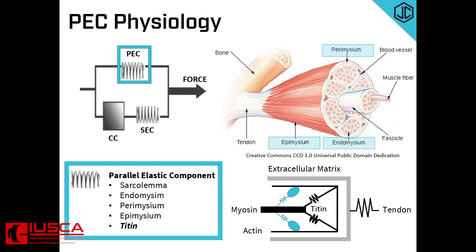The intramuscular connective tissues have three probable functions. First, it provides a framework to bind muscles together, ensuring proper alignment of muscle fibres, blood vessels, nerves, etc. Second, it enables active and passive force transmission. Third, it enables the necessary lubricated surface between muscle fibres and fascicles, so that they can slide over each other and change shape when necessary.